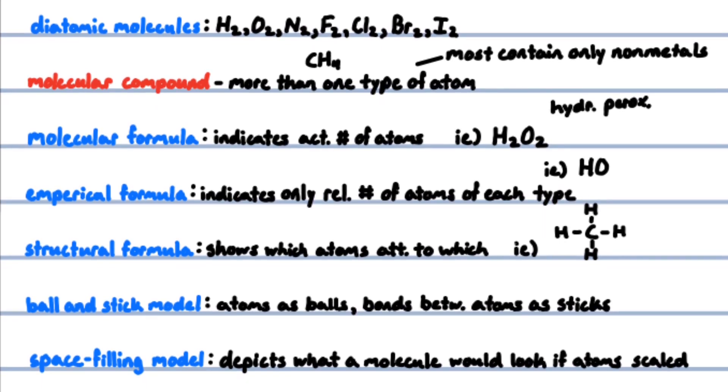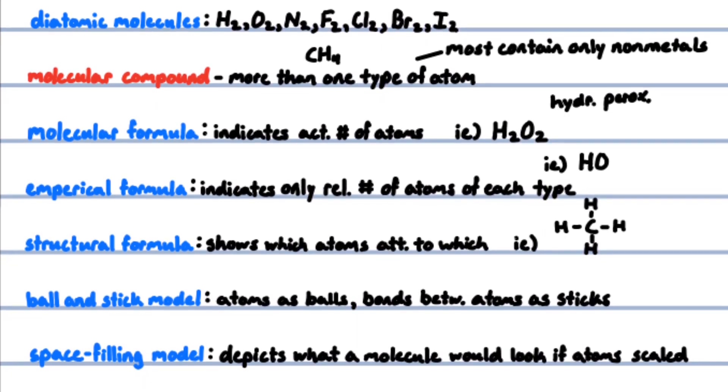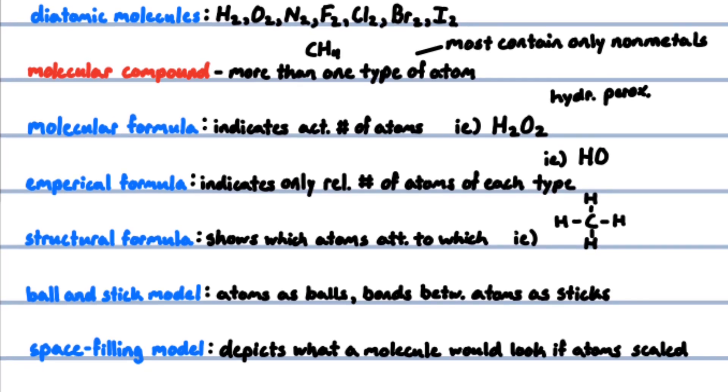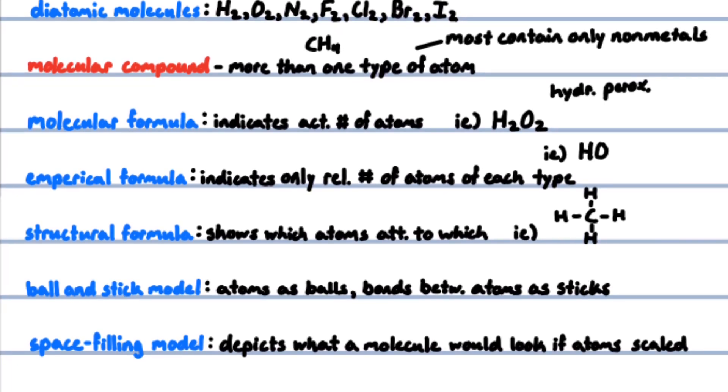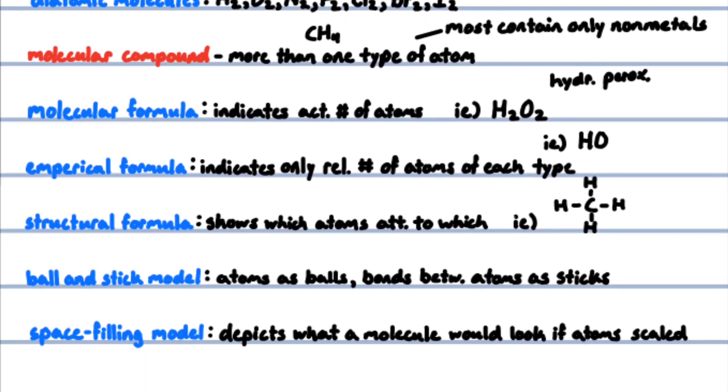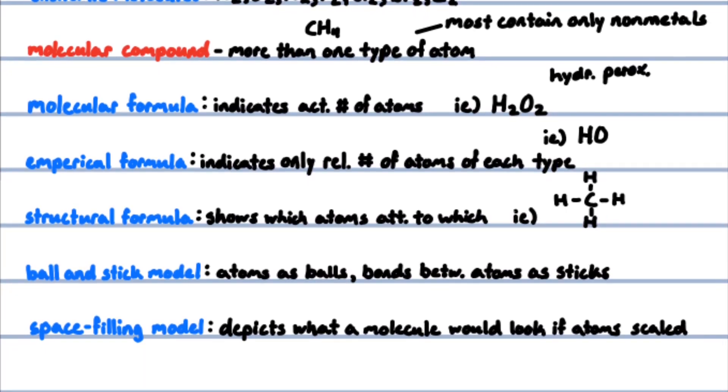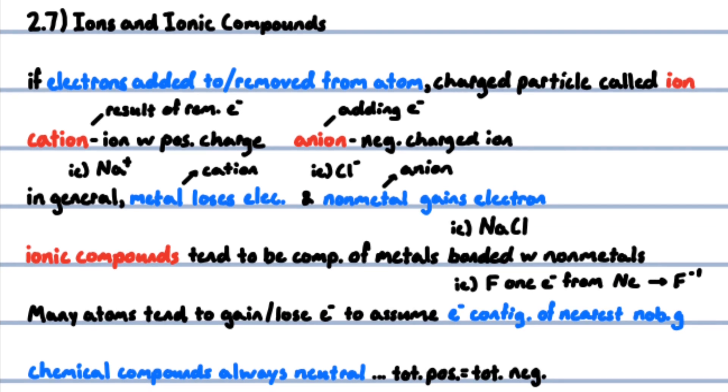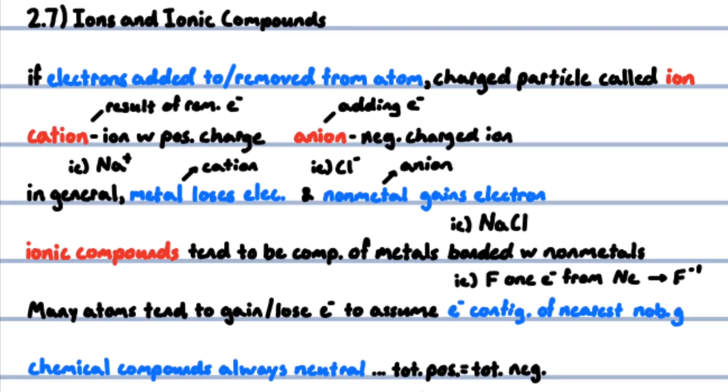A structural formula shows which atoms are attached to which. For example, each hydrogen in a methane molecule is attached to the central carbon atom. Ball-and-stick models show atoms as balls and the bonds between atoms as sticks. Space-filling models depict what a molecule would look like if the atoms were scaled up in size.